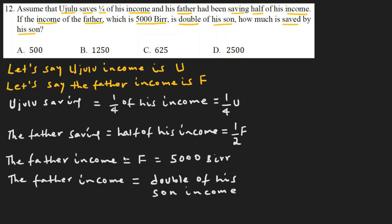So the father's income F equals twice of U — meaning F = 2U. That is all the given information. Now the question is: how much is saved by his son? Ujulu's saving equals one-fourth of his income, which is one-over-four times U.